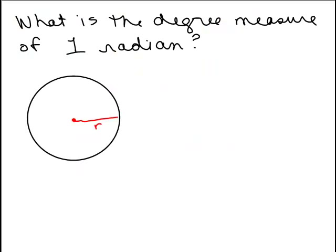What is the degree measure of one radian? That's the same thing as somebody saying one radian equals how many degrees? And remember, we don't have to write radian. We could just say one equals.